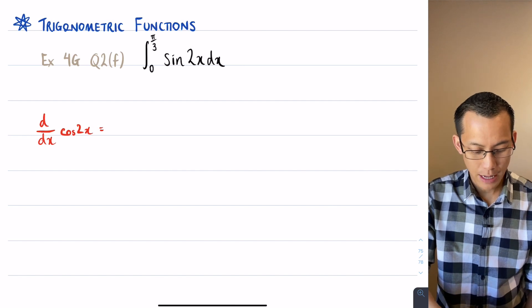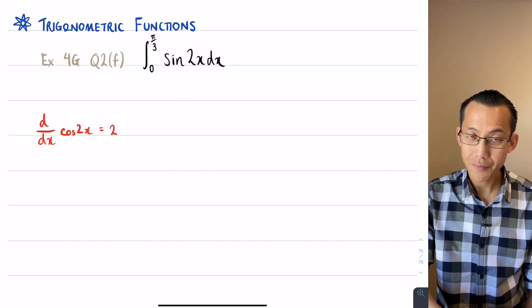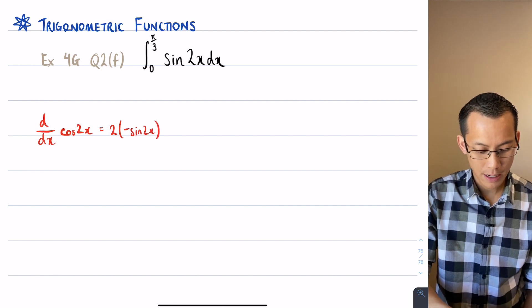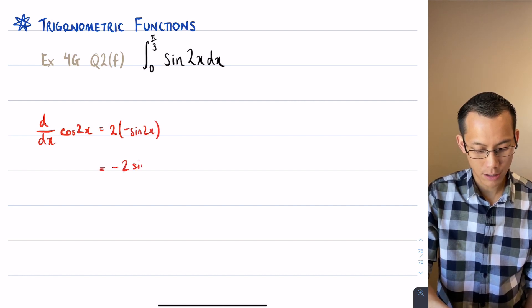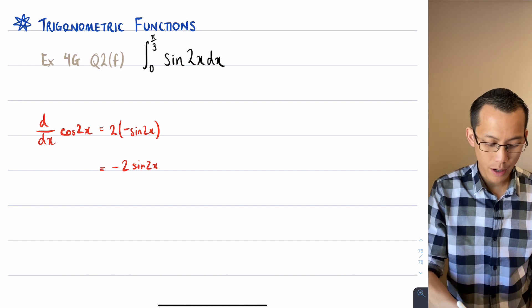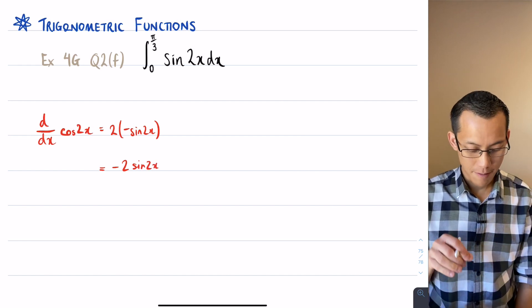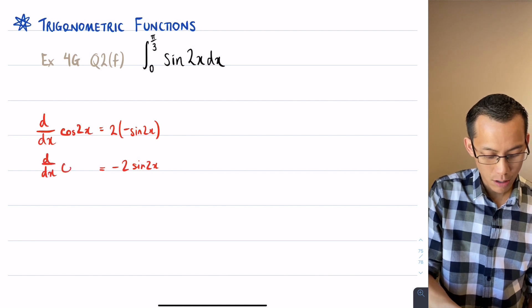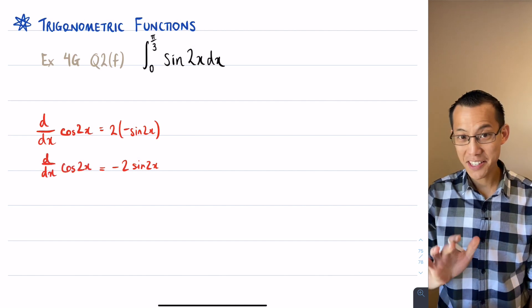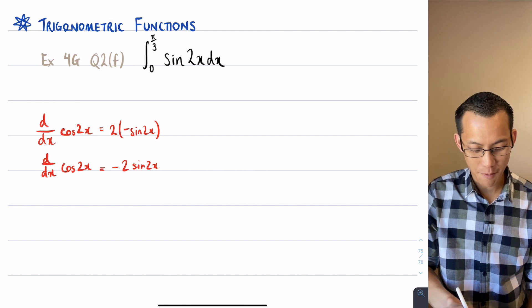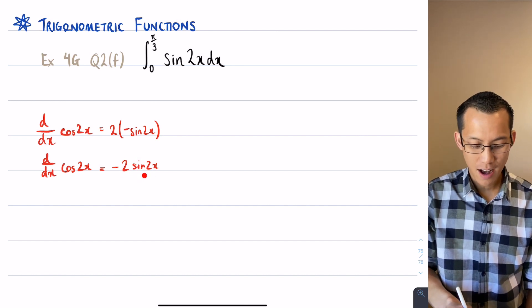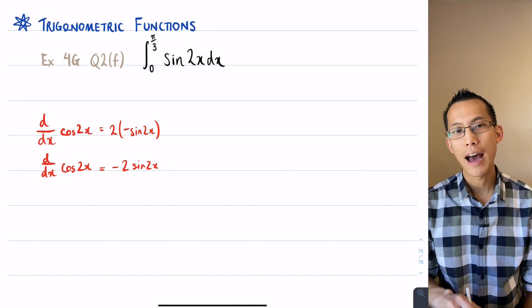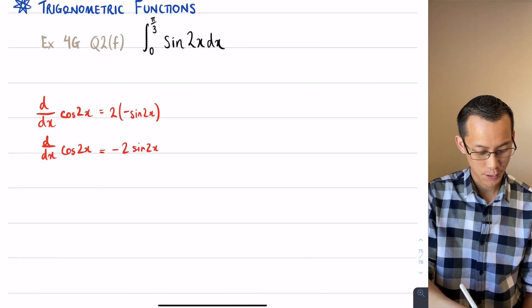The inside is going to be 2 and then the outside is going to be negative sine. So I'm getting here minus 2 sine 2x. In other words, if I were to integrate minus 2 sine 2x, where I would end up is with cos 2x. Now this is not what I want. I don't want to have minus 2 out the front here, I want just the sine 2x all by itself. So what I'm going to do in this red working is divide both sides by negative 2.